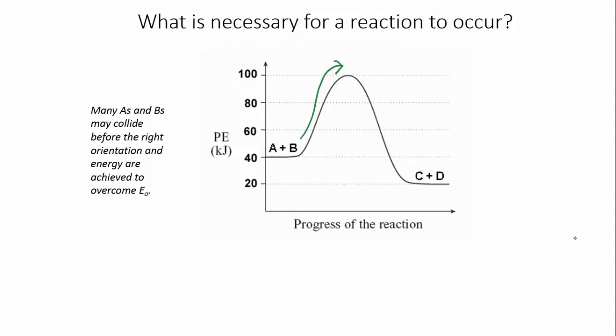If successful collisions happen frequently, then the reaction will proceed quickly, which is the same as saying that the rate of reaction is high. If successful collisions are rare, then the reaction is very slow.